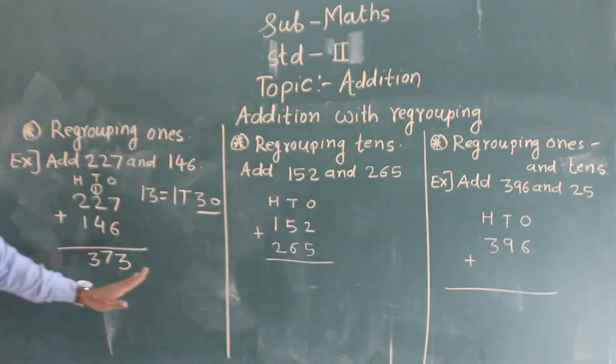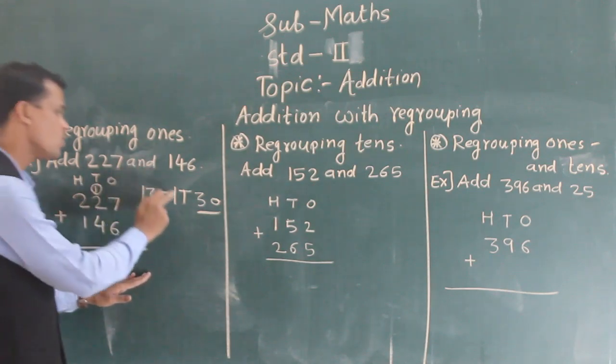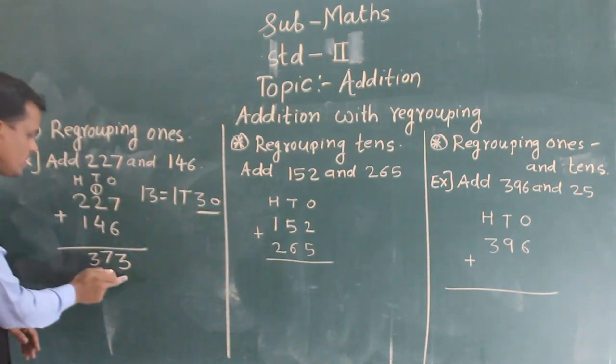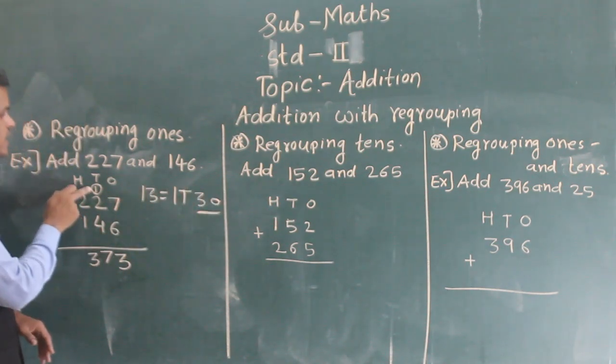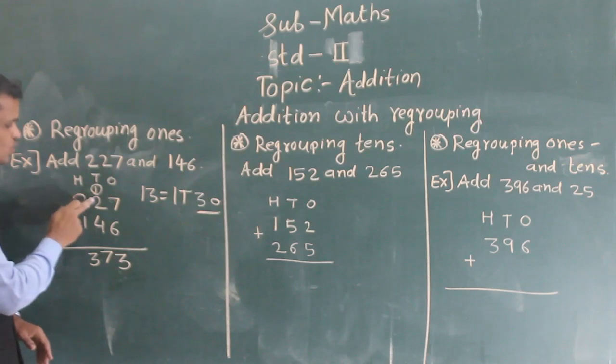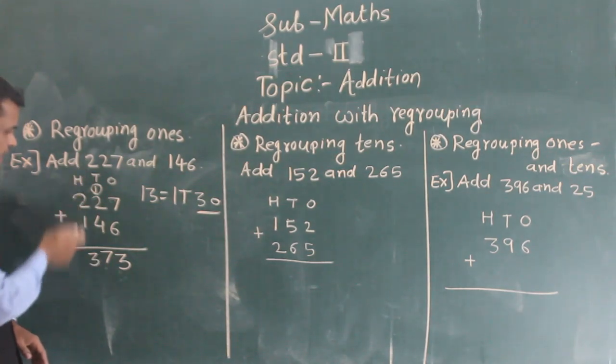Here we regroup ones column because here 7 plus 6 ones require 13 ones, so we regroup that 13 ones into 1 ten and 3 ones. So I wrote here 3 and 1 carry, so tens plus tens, then 2 plus 4, 6 and plus 1, 7 and then I added this column, 2 plus 1, 3.